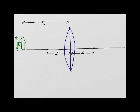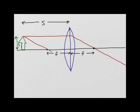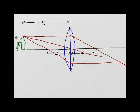Now draw the three special rays from the tip of the arrow. The first ray is parallel to the axis on the front side, then passes through the focal point on the other side of the lens. The second ray passes through the focal point on the front side of the lens, then bends so it is parallel to the optic axis on the other side. Lastly, the ray through the center of the lens goes straight through without bending, since both sides of a thin lens are parallel at the center.